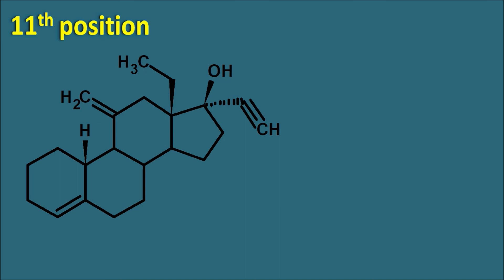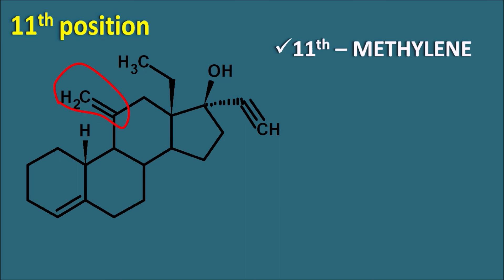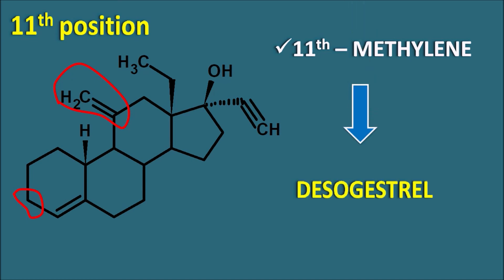At the 11th position, a methylene group is introduced. Along with this 11th methylene group, the 3-keto group is also removed — although we discussed that delta-4-3-keto is essential for activity, in this structure the delta-4 double bond is preserved but the 3-keto group is removed. This results in desogestrel, which is a third-generation progestogen with greater activity compared with progesterone.